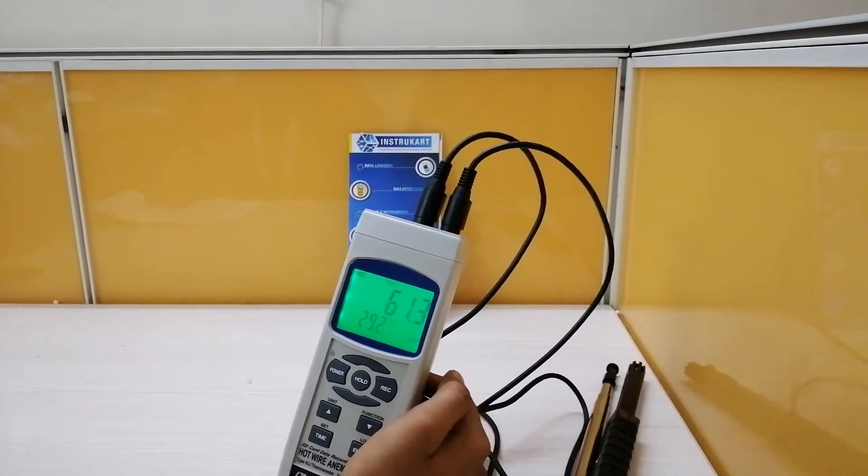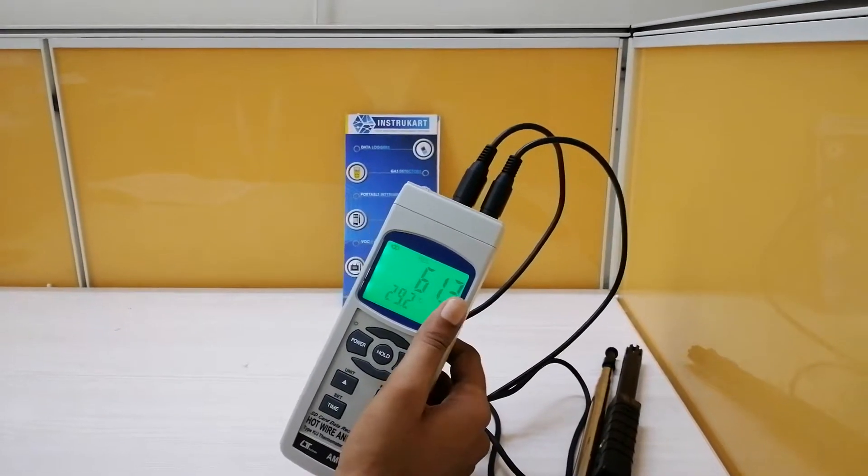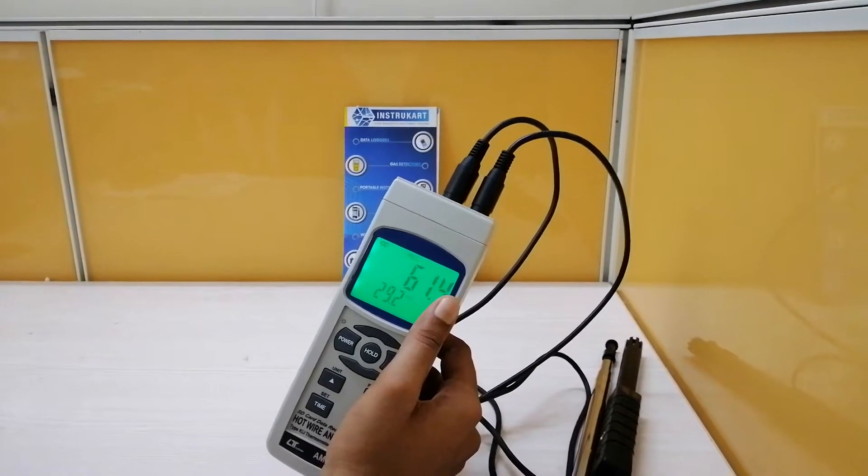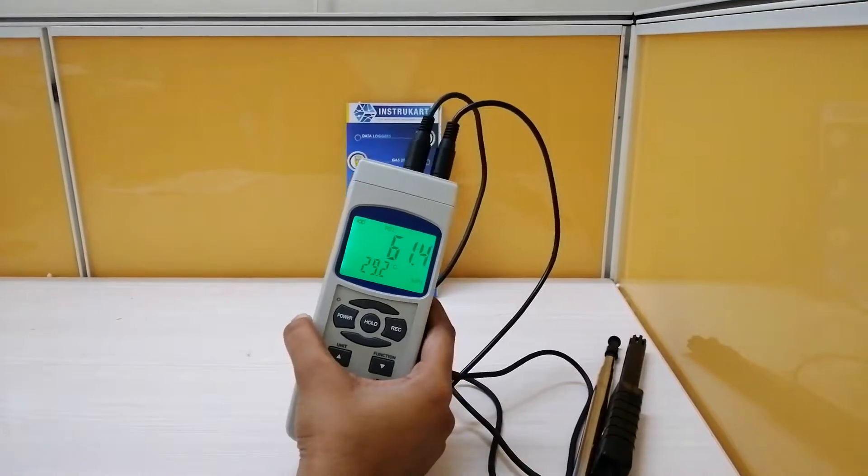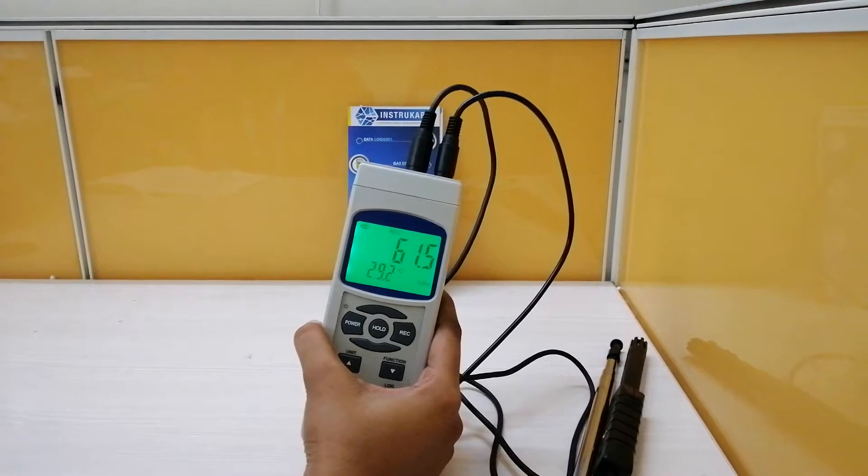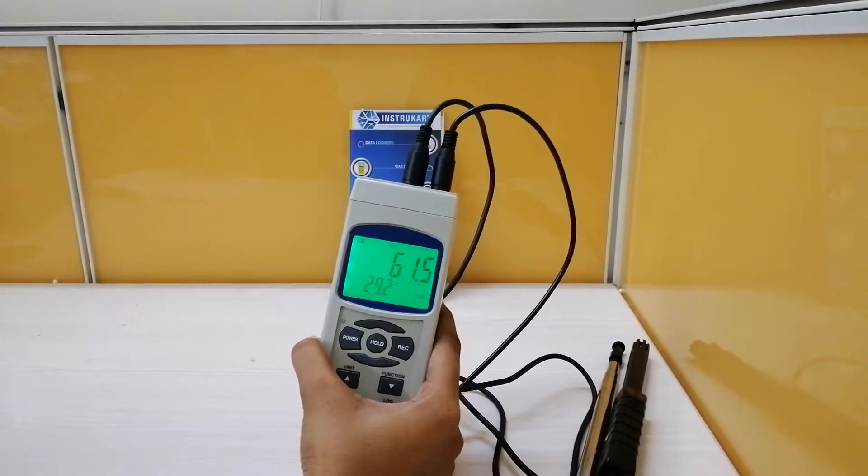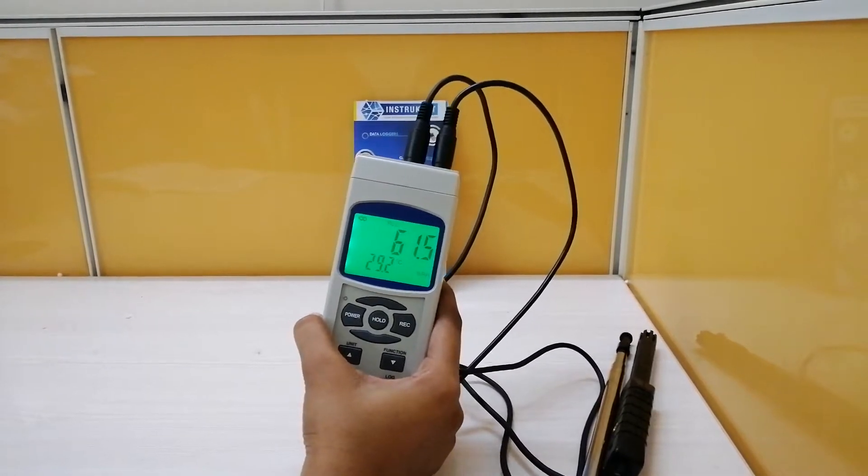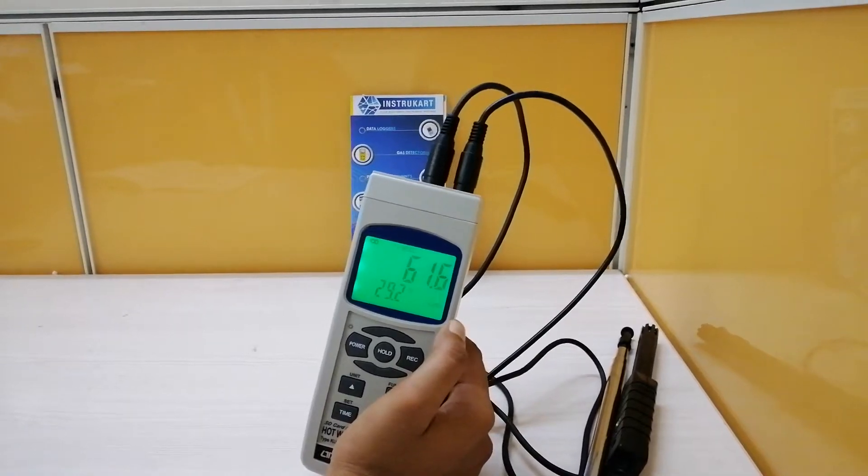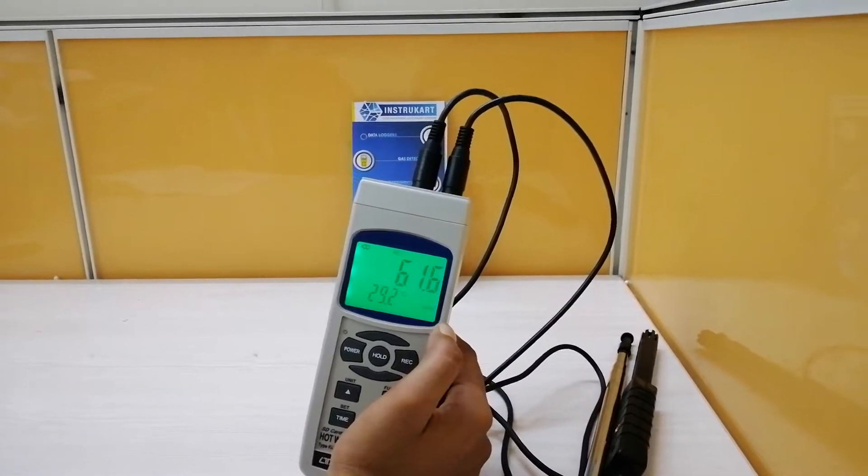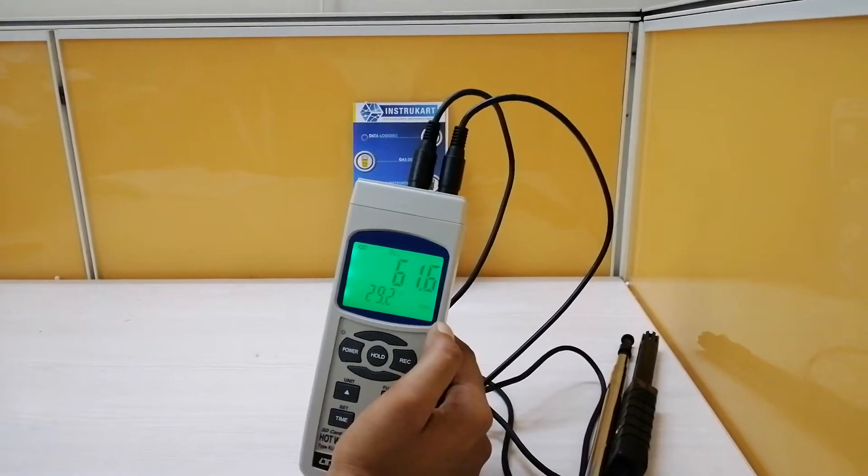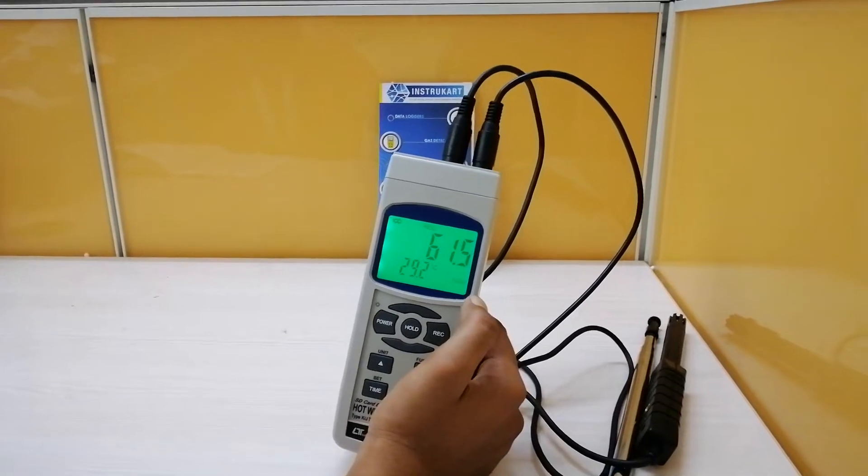You can measure the airflow with this anemometer in both CMM and CFM. The range of CMM for this anemometer is 0 to 54,000. CFM for the same is 0 to 1,907,000 CFM. It can also set the area for the airflow. It is around 0.001 to 30 meter square. For CFM it is around 0.01 to 322 feet square.